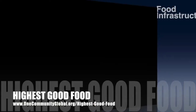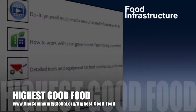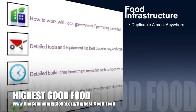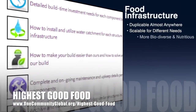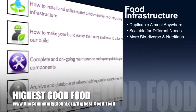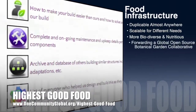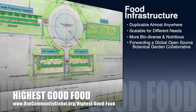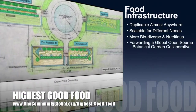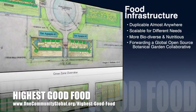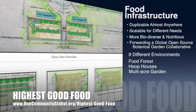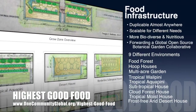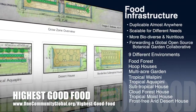One Community's approach to highest good food is duplicable almost anywhere, scalable for different needs, more biodiverse and nutritious, part of forwarding a global open source botanical garden collaborative, and includes 9 different free shared and duplicable growing environments.